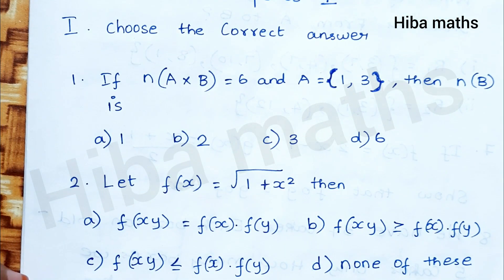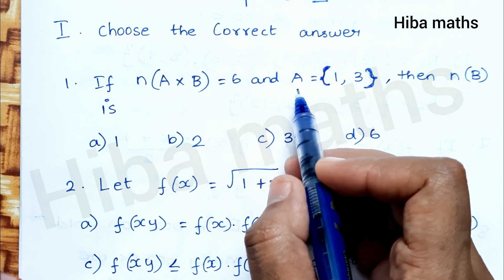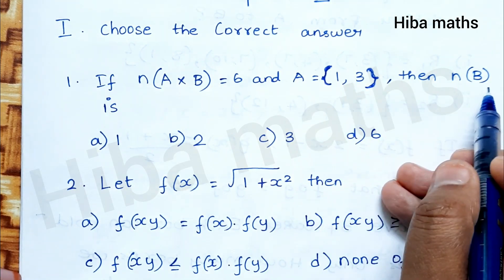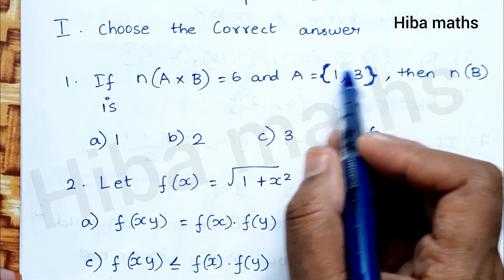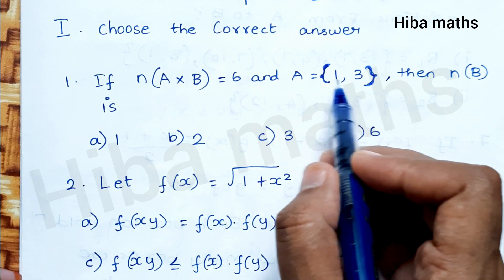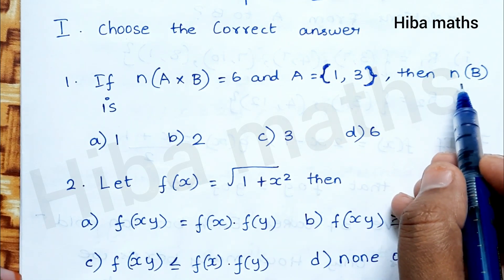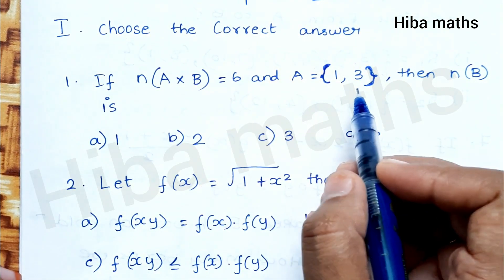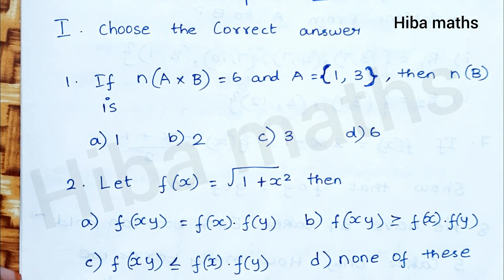Choose the correct answer. If n(A×B) = 6 and A = {1, 3}, then find n(B). In this type of question, n(A) is easy — there are two elements. Then n(B) is equal to 3. So the answer is option C.